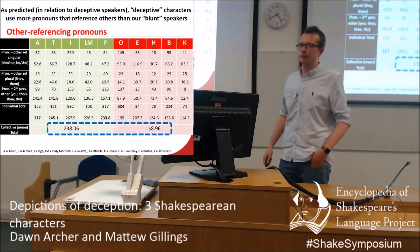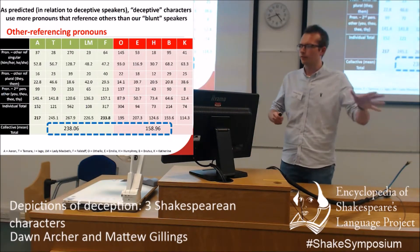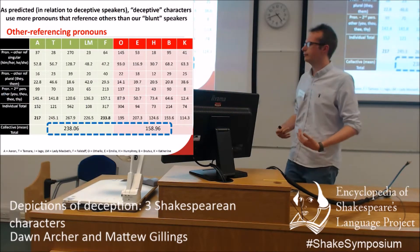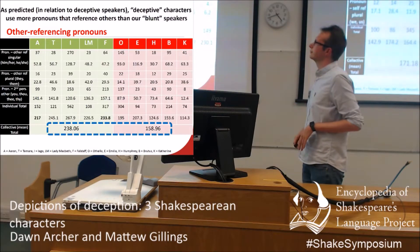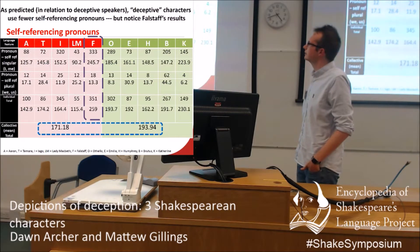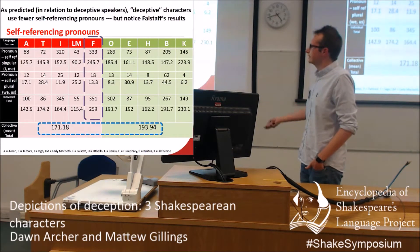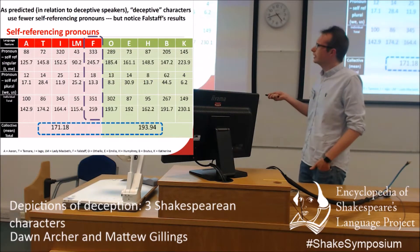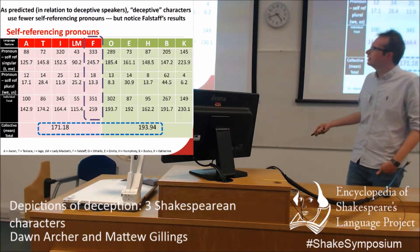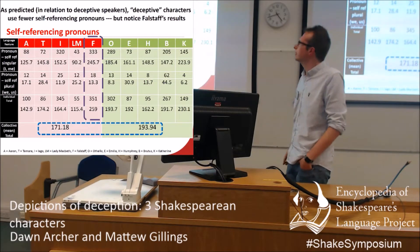As predicted, the results fit the deception literature. The deceptive characters are using more pronouns referencing other people. That's been suggested in psychology as some kind of distancing — by referring to other people rather than yourself, it takes the shine away from yourself, a lack of responsibility from the speaker. And likewise, for self-references — I, me, we, and us — we've got the deceptive characters and the blunt characters, and we're seeing a similar thing. We hedge slightly about Falstaff in particular: he's got this massive ego, and that's what we're seeing in his results, with a high proportion of I and me — particularly I — with Falstaff.